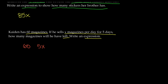The key term here is 'left.' How many magazines does he have left? If he originally has 60 magazines, we subtract 5x to find out how many remain. So our expression is 60 minus 5x. For example, if x equals 2, then 5 times 2 is 10, subtracted from 60 gives 50 — meaning Caden still has 50 magazines left.